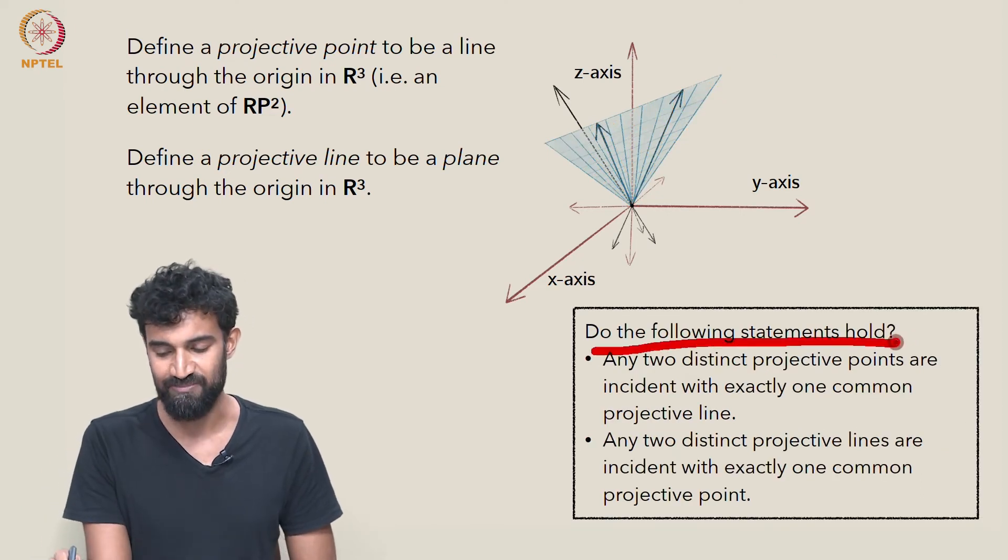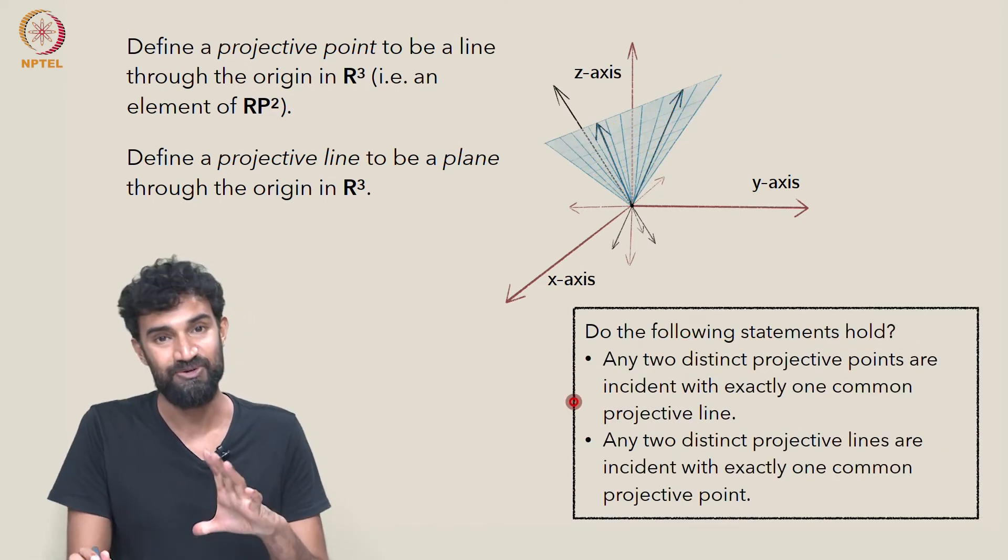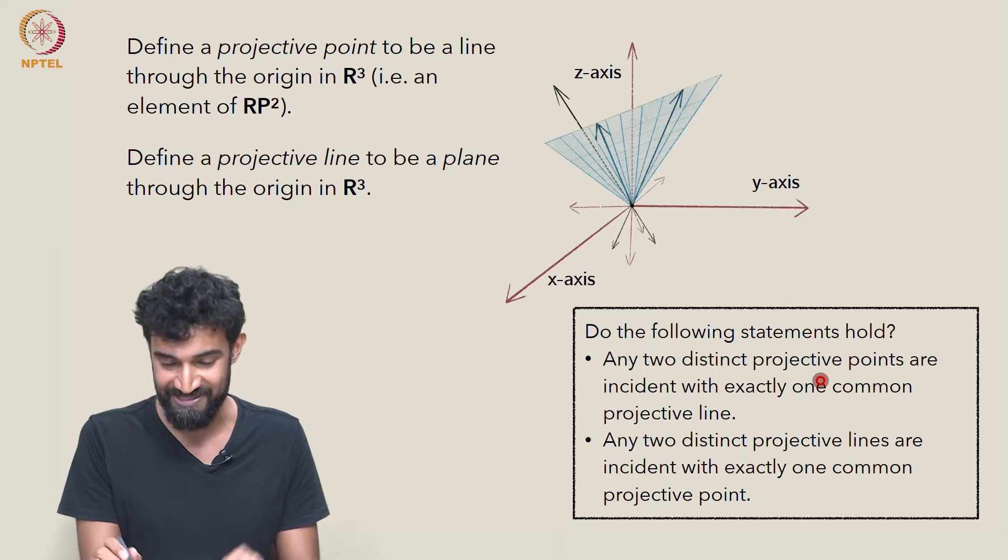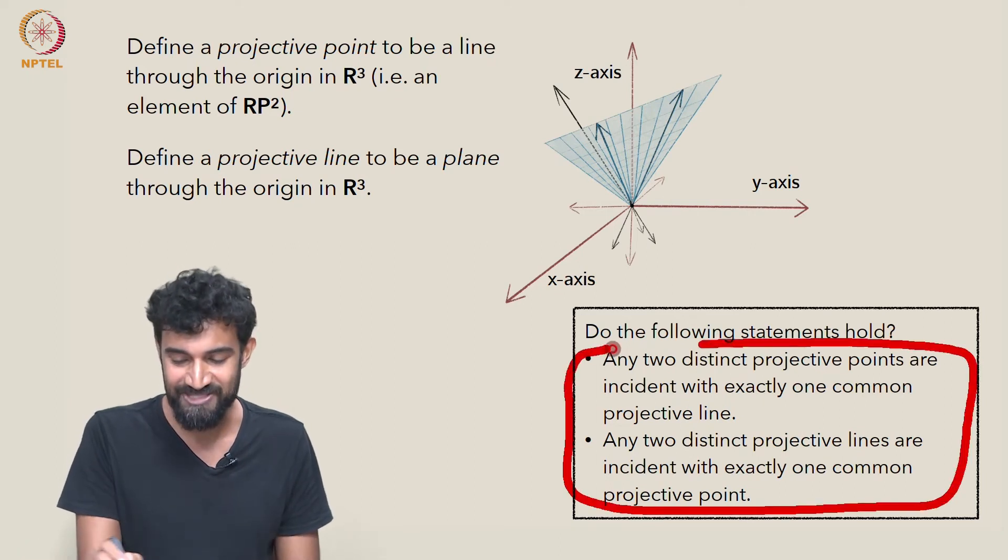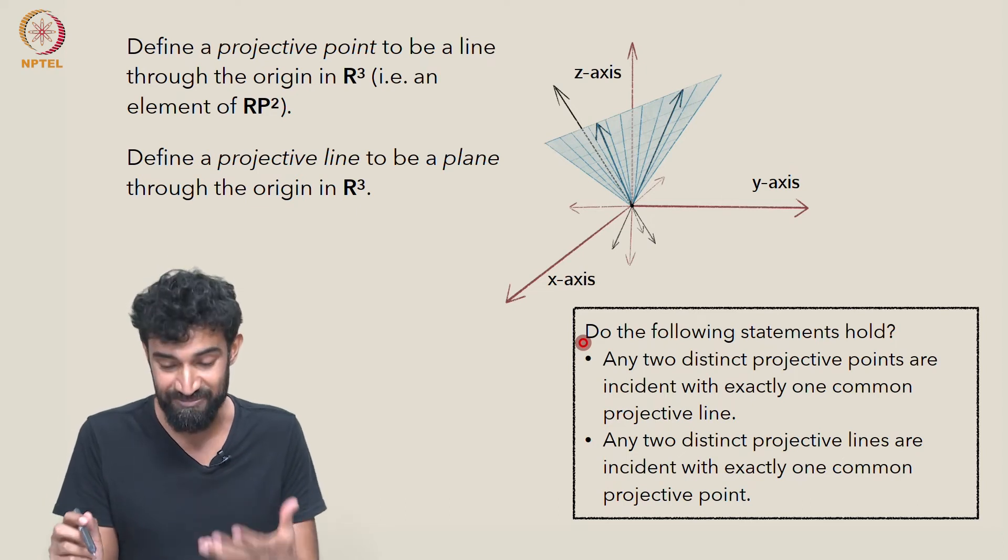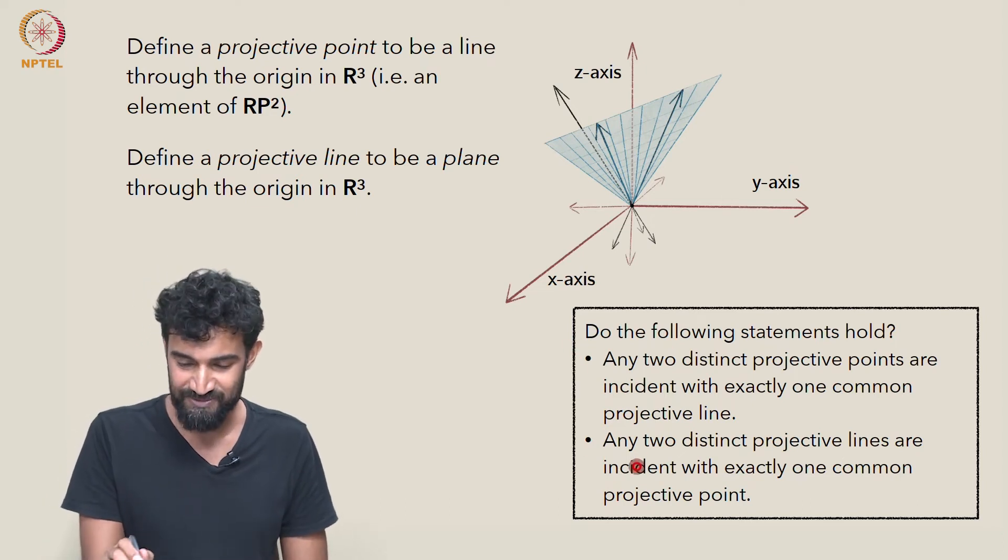So do the following statements hold? These are our kind of basic axioms, statements of incidence. And we can think of them also as axioms, actually, of a projective plane, of an extended plane. So do these axioms hold, do these statements hold for RP² as we've defined it?